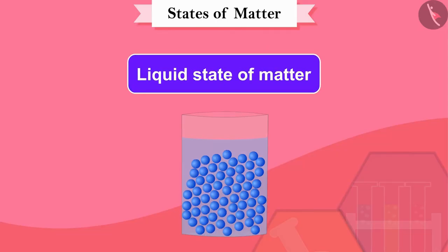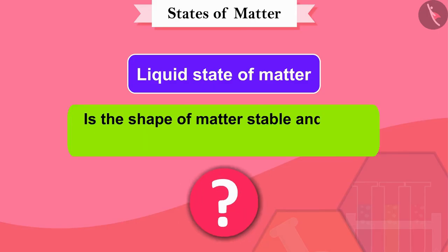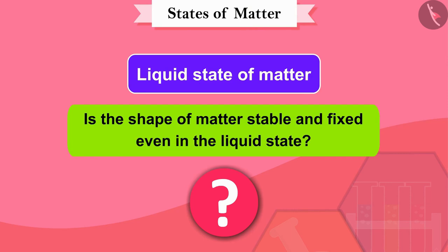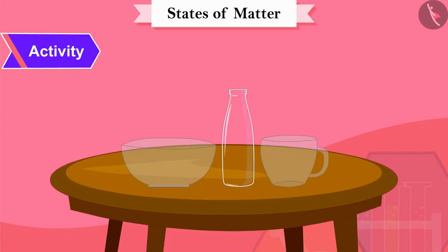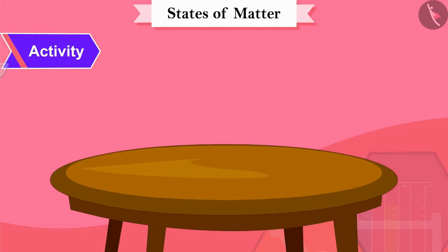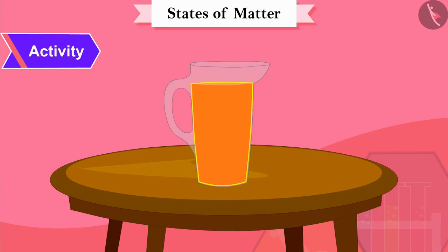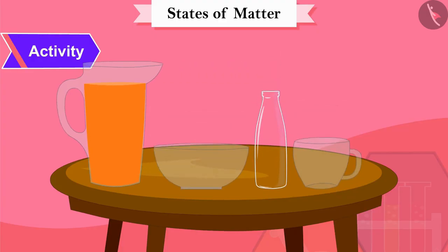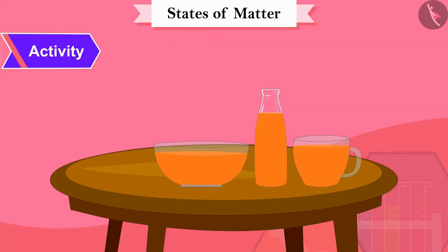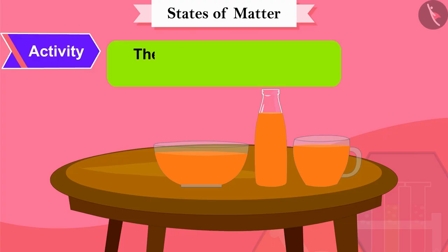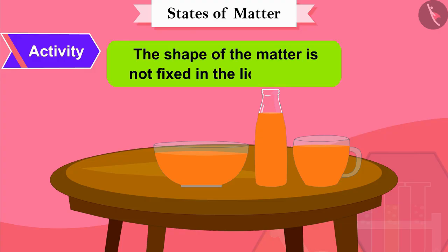Now let us see the liquid state of matter. Like solid matter, is the shape of matter stable and fixed even in the liquid state? Let's find this out by an activity. There are three different sizes of glass utensils. There is juice in this jug — at the moment, the juice has taken the shape of the jug. Now we will pour this juice into these glass pots one by one. The juice changed its shape every time. This means the shape of matter is not fixed in the liquid state.